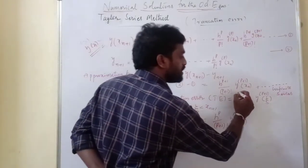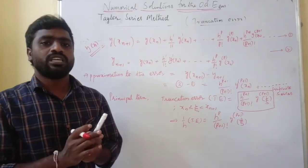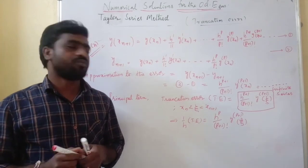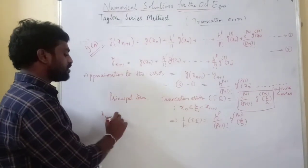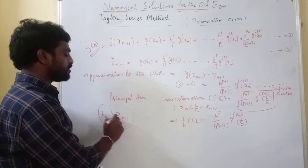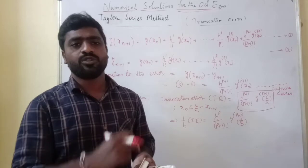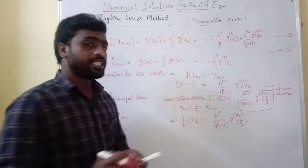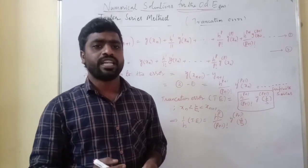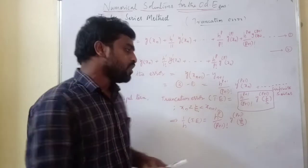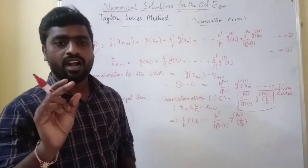So the truncation error is identified, where xi is between xn and x(n+1) because the given nodal points are equally spaced. If we move h to the right-hand side, we get 1/h times the truncation error equals h to the p over (p+1) factorial times the (p+1)-th derivative at xi, where xi is between xn and x(n+1). Here, h to the p indicates the order of the given Taylor series method.